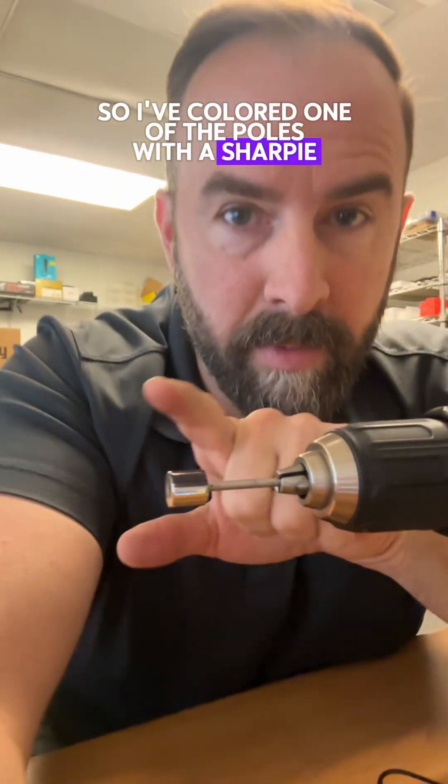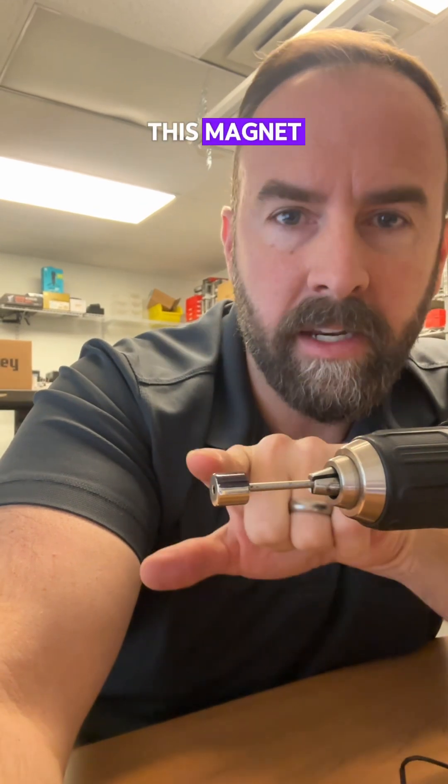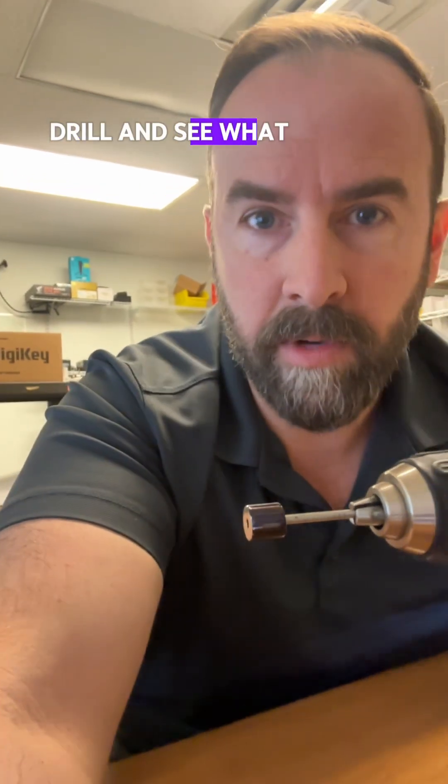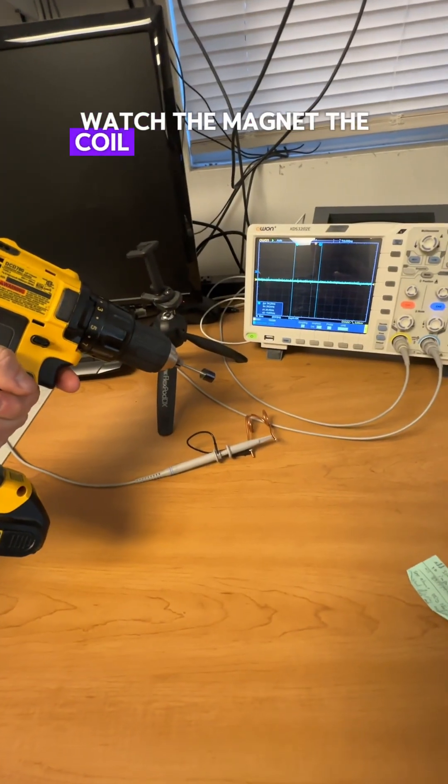So I've colored one of the poles with a Sharpie so that you can see what's going on in this magnet. And it's diametrically magnetized as we said, and we're just going to rotate it on this hand drill and see what happens. Watch the magnet, the coil, and the waveform.